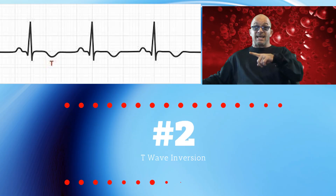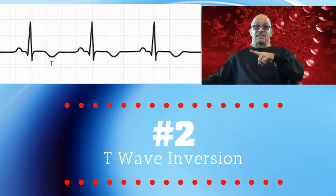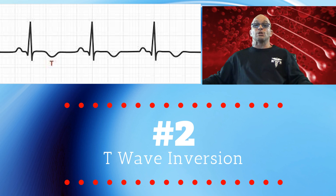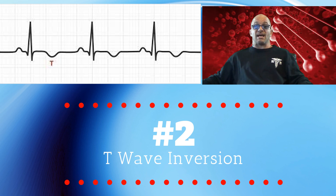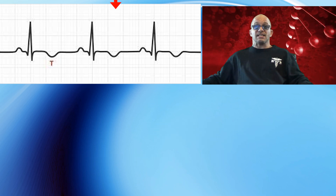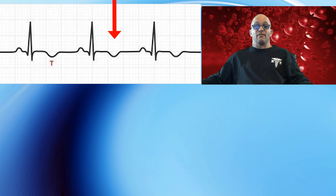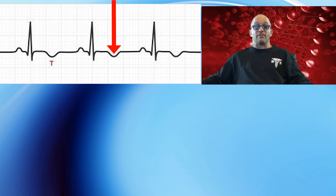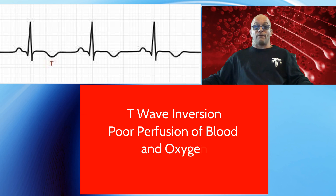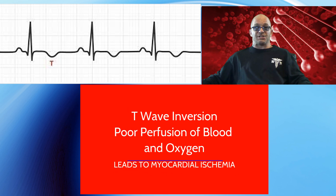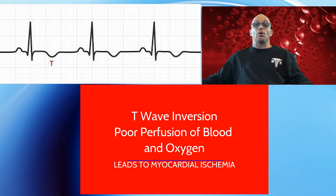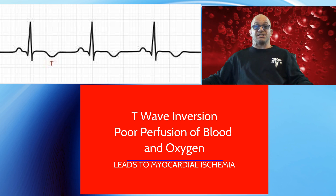Our second analysis of an abnormal EKG rhythm shows another problem with the ST segment. This rhythm shows an inverted T wave, which usually means poor perfusion of blood and oxygen, which can lead to myocardial ischemia.